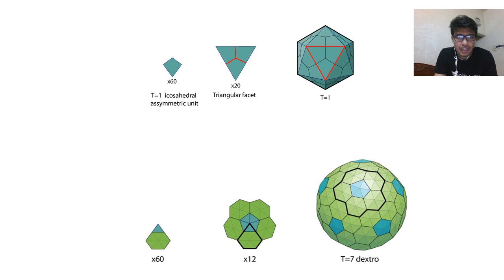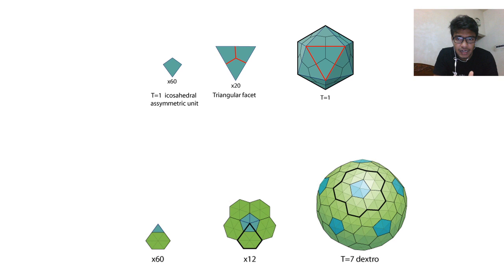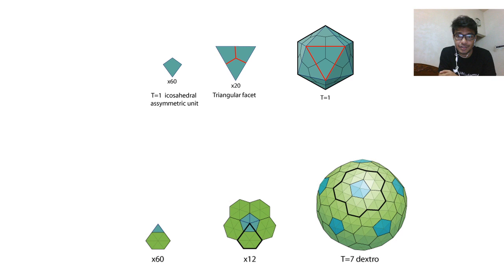In icosahedral symmetry, small subunits form triangular facets which come together to make the icosahedron with 20 triangular faces. These facets could also be different in shape — for example hexagonal modules forming T7 dextro symmetry. These higher-order symmetries are rarely asked in IIT Jam, but it's good to understand the in and out of viruses.